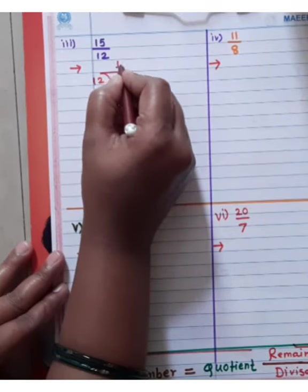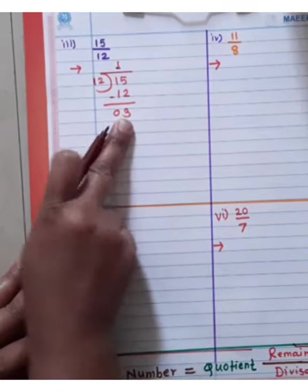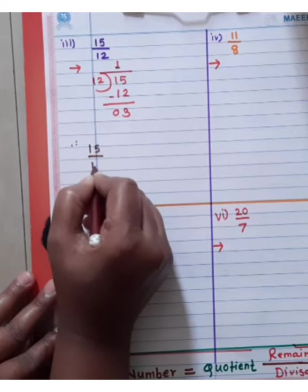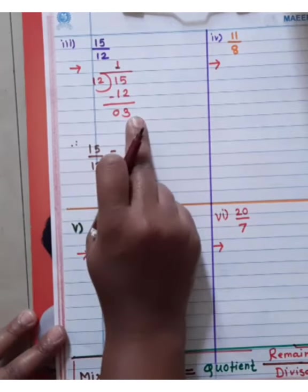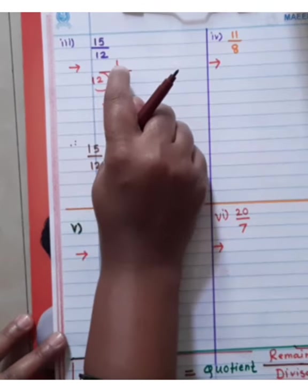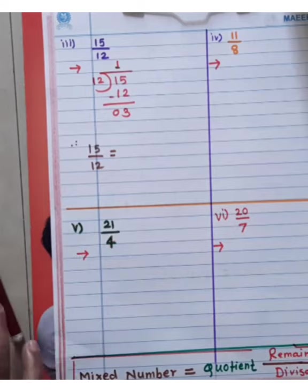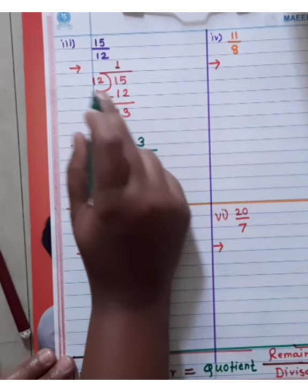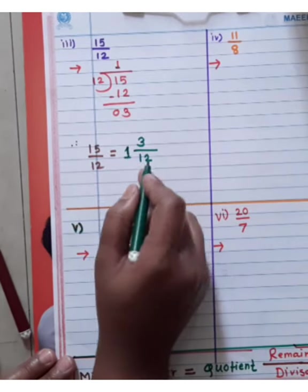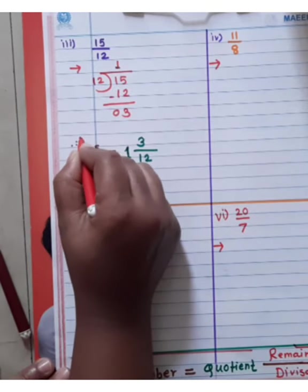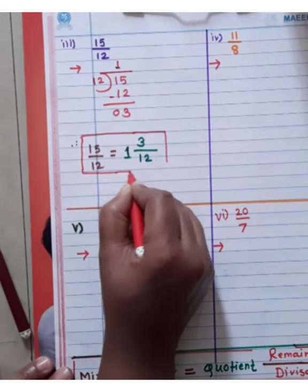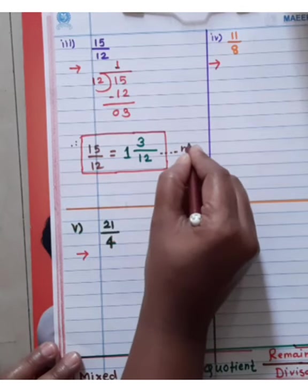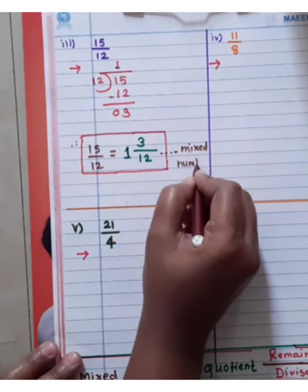So, this is the remainder. 15 by 12 is equal to the mixed number: quotient is 1, so 1 and 3/12. This is the mixed number.